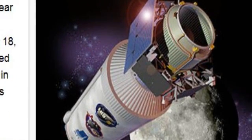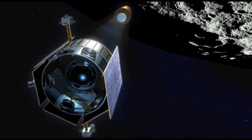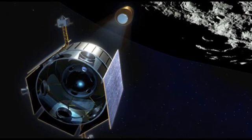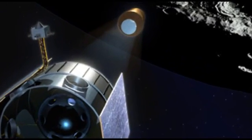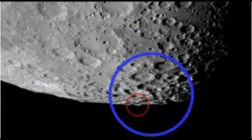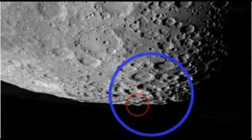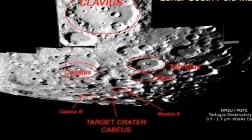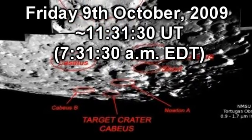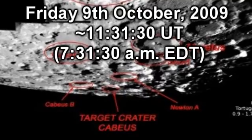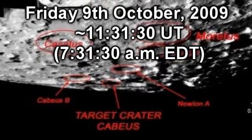On Friday morning it will accelerate an impactor weighing about 2 tonnes, up to about twice the speed of a rifle bullet, and it will steer it into the permanent dark of this crater. It will impact at 7:31 and 30 seconds Eastern Daylight Savings Time, releasing the same energy as about a tonne of TNT.